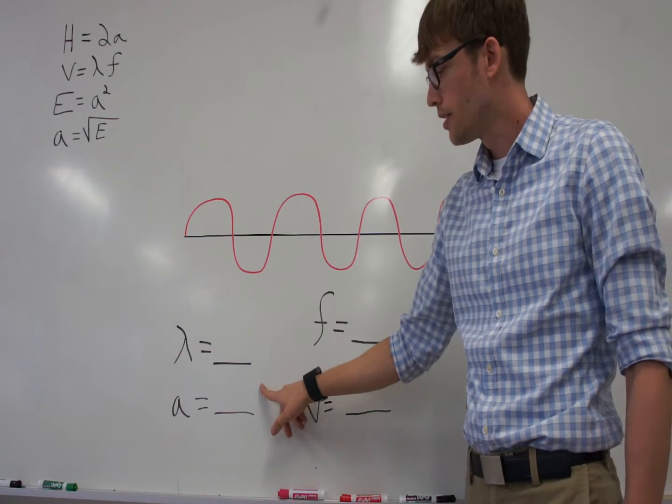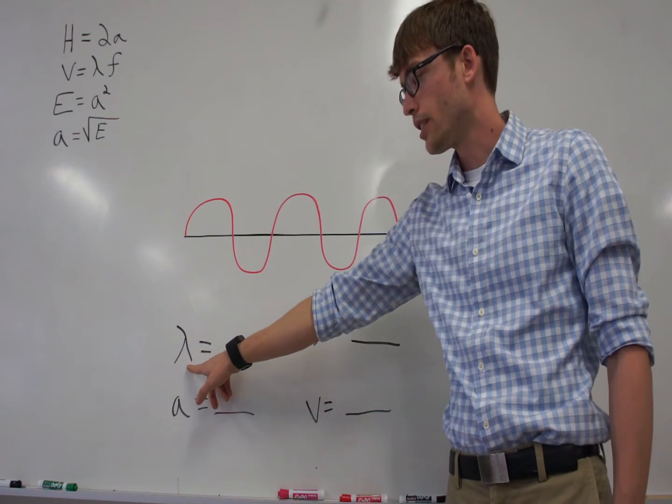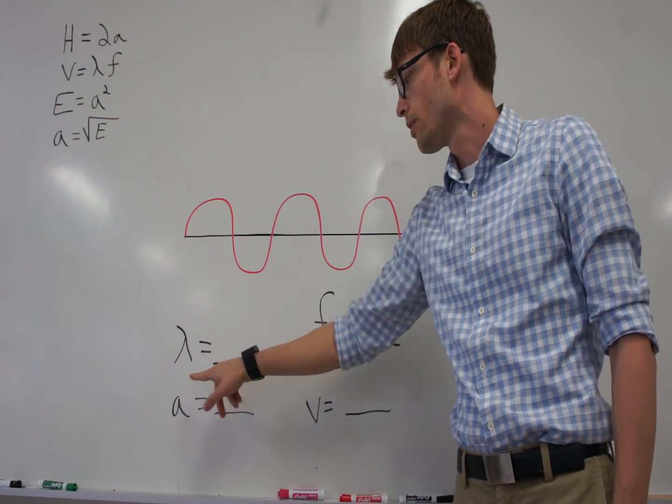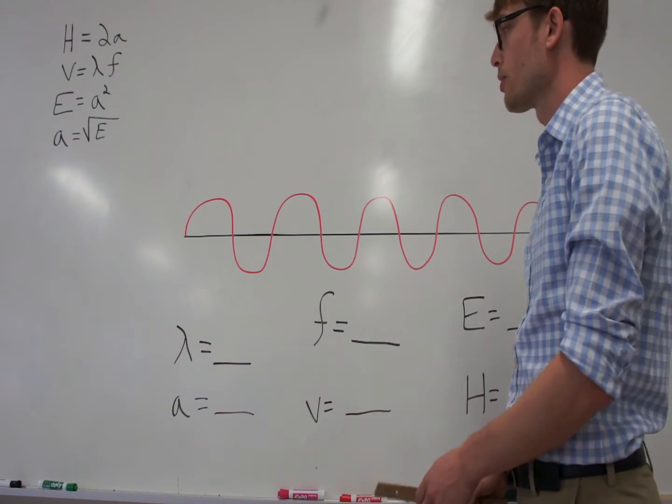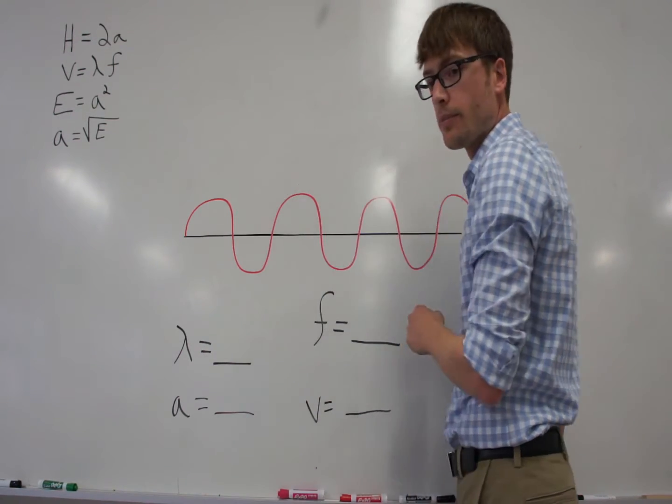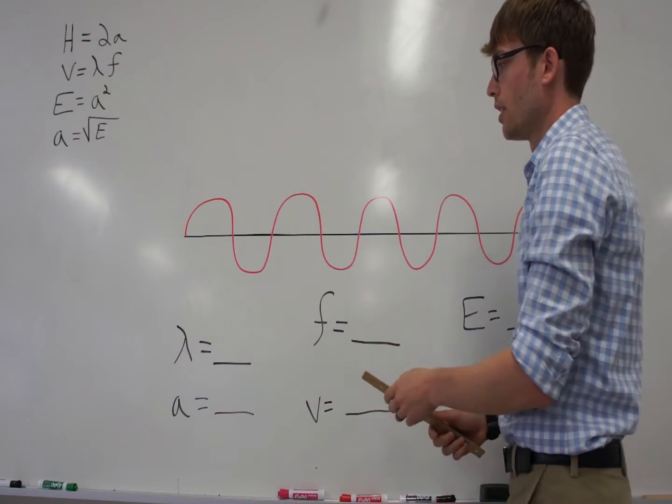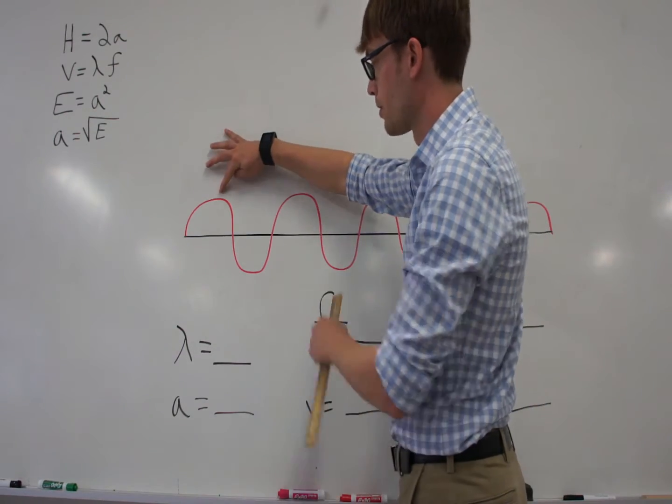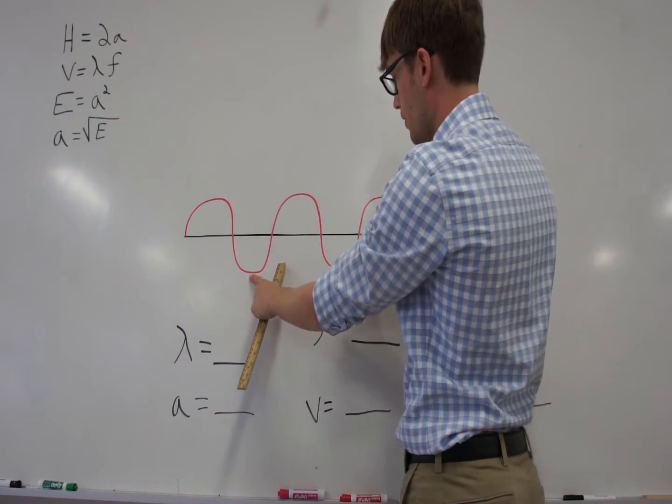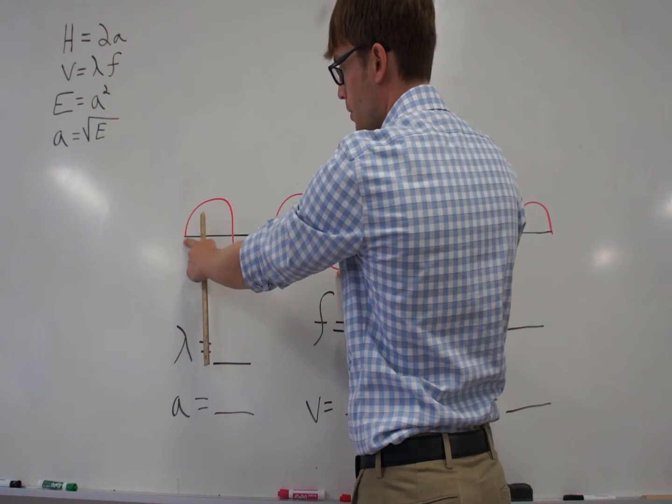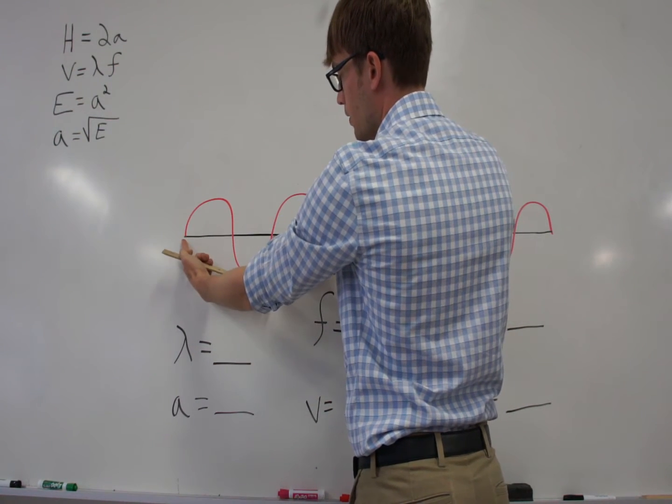First, let's find wavelength, represented by the Greek letter lambda. In order to find wavelength, you need to measure from one point on a wave to the next consecutive spot on that wavelength. For example, you could measure from crest to crest, from trough to trough, or from the beginning of the wave to the end of the wave on the S method.